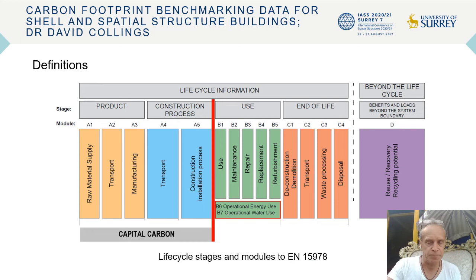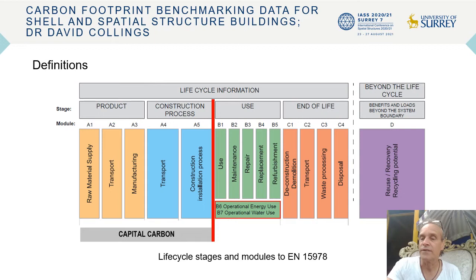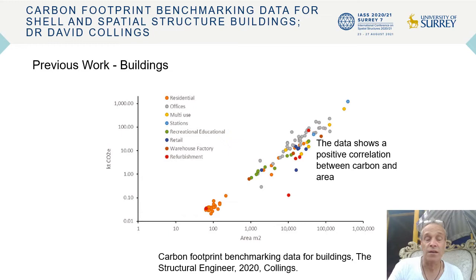Some definitions: the carbon I'm looking at is the capital carbon, which is the product and construction process carbon used to build the structure. It doesn't take into account the carbon during the life of the structure — so that's during use — nor does it take into account end-of-life carbon, either savings or additions. It is capital carbon, the general construction carbon associated with the capital cost of the building.